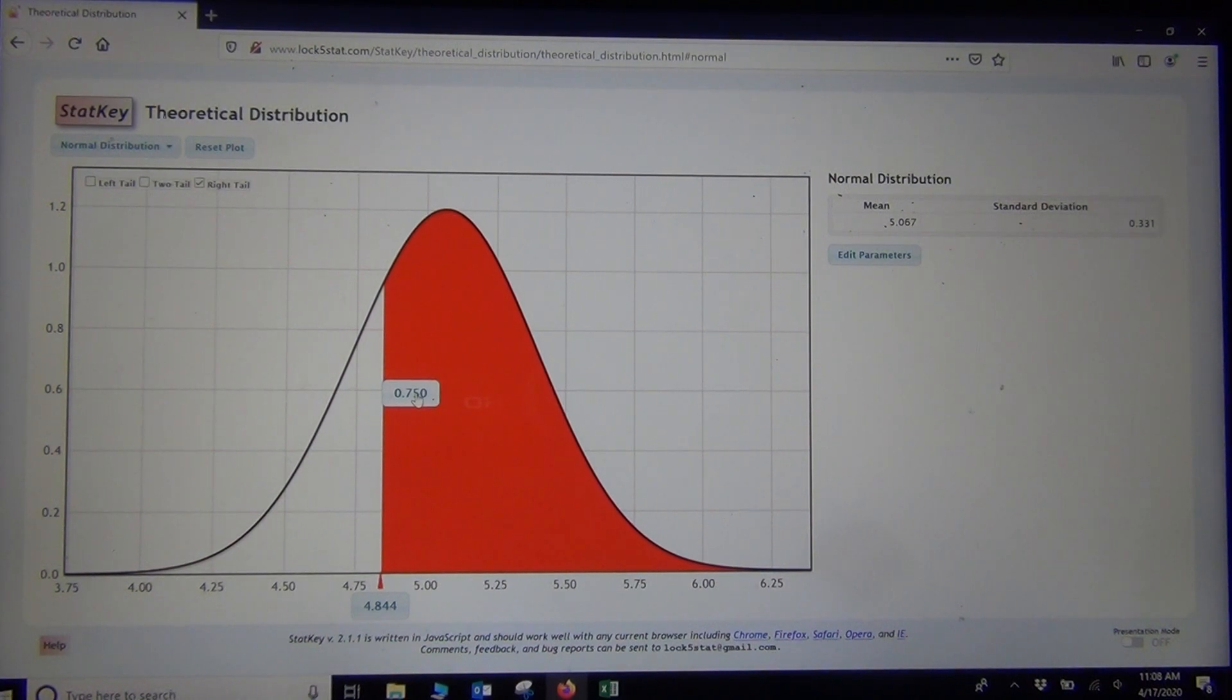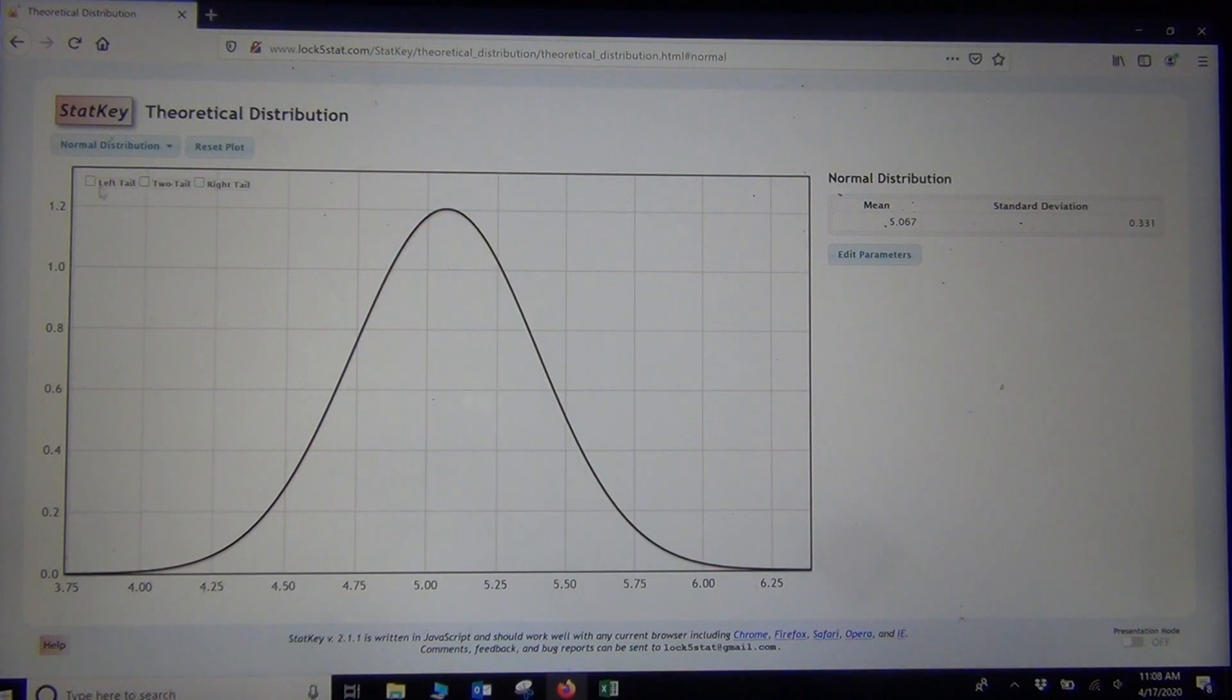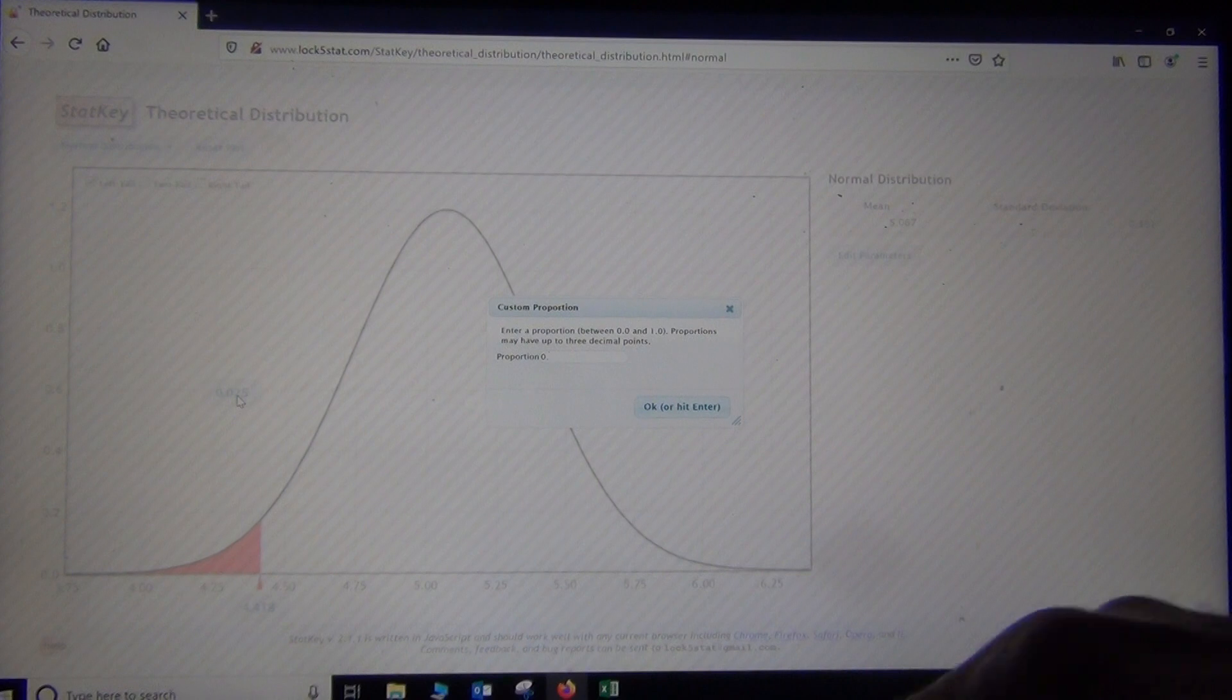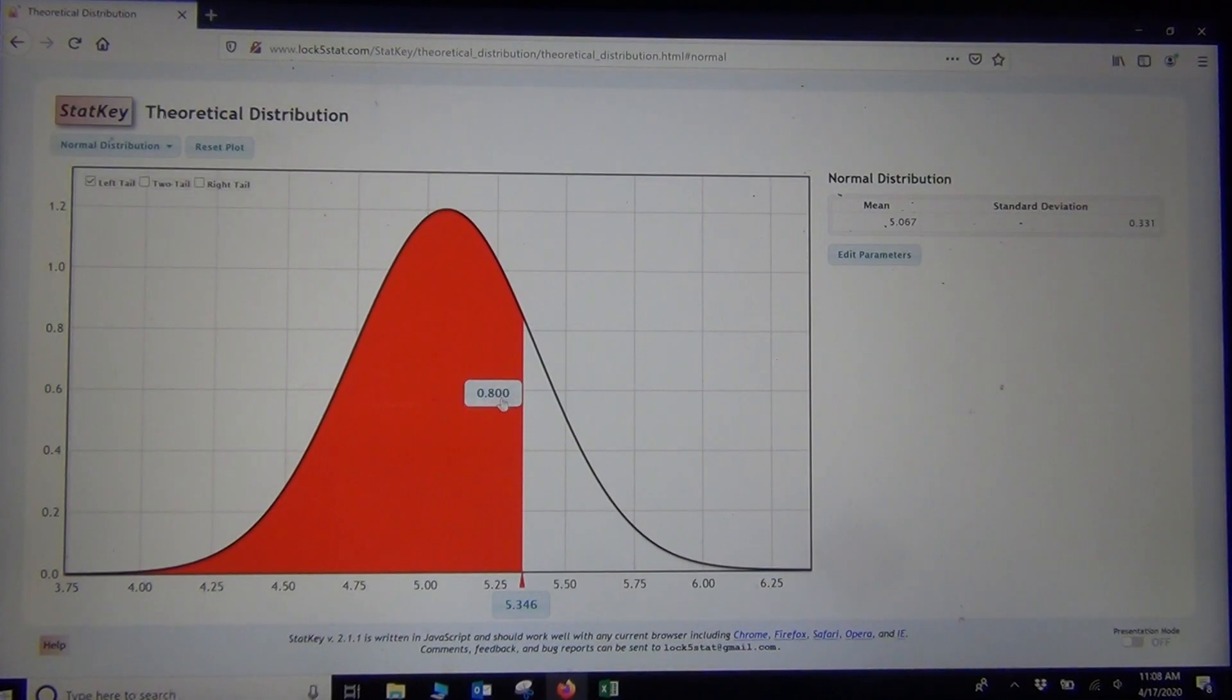So what if I want to know the percentage, the inches with circumference that about 80% of women are less than. Okay, well remember, less than would mean left tail. And the 80%, remember, is a proportion. So it's got to go up here. So 80%, or 0.80, or 0.8, I just type that in the upper box, and then the bottom box gives me the answer. So about 80% of women have a wrist circumference below 5.346 inches.